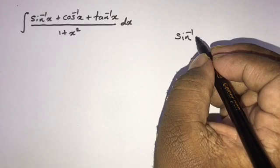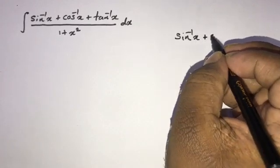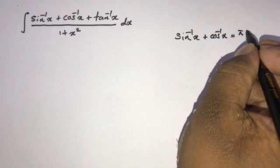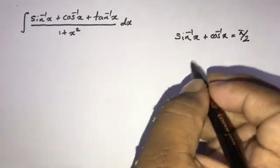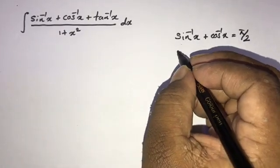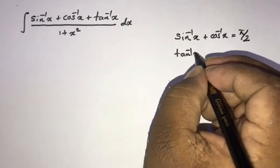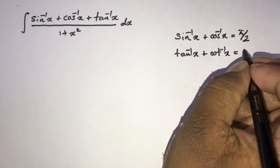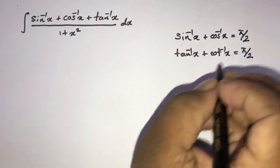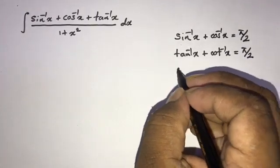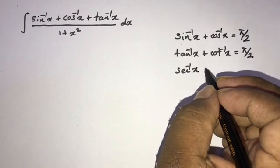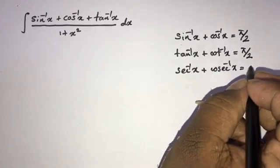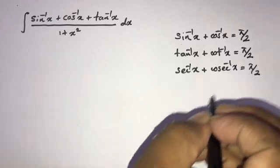Sin inverse x plus cos inverse x is equal to π over 2. Tan inverse x plus cot inverse x is equal to π over 2. Sec inverse x plus cosec inverse x is equal to π over 2.